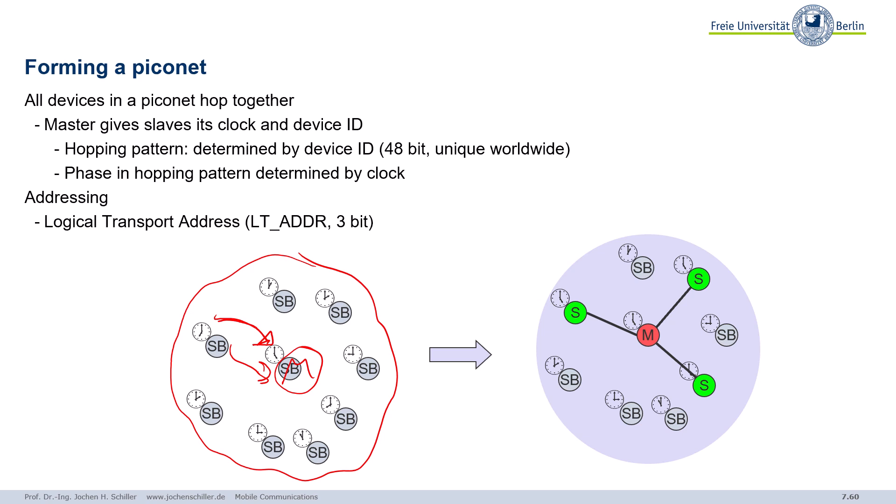Joining a Piconet requires synchronization, after which you can be assigned a 3-bit Logical Transport Address. Communication is only possible from a slave to its master or from the master to a slave — in standard configuration there is no communication between slaves. The master controls the network. The master doesn't need an address because all communication goes to or comes from the master. Packets from the master need only a destination address so the right slave knows it's for them; packets from a slave need only a source address.